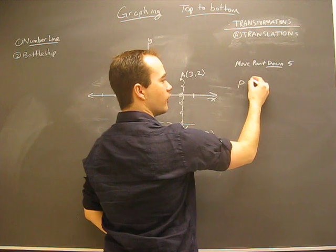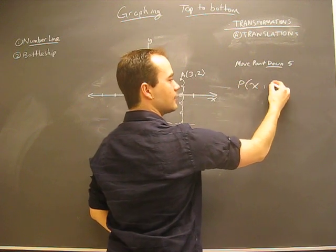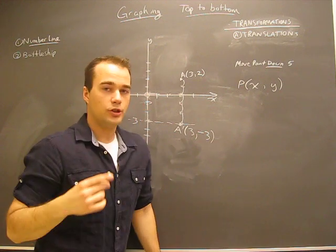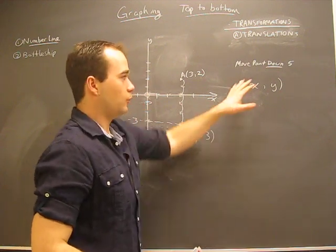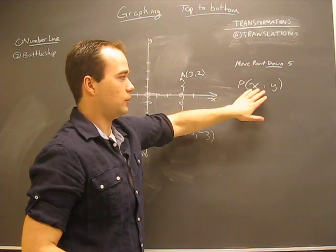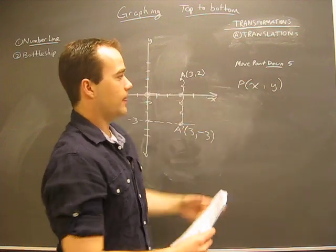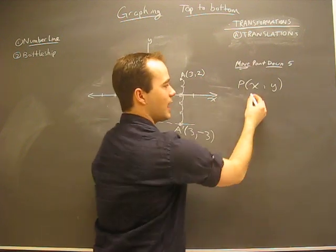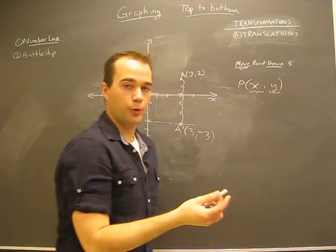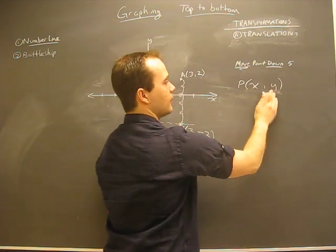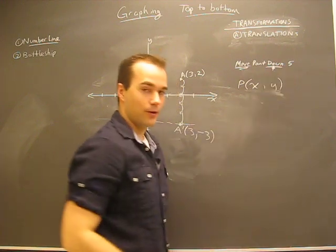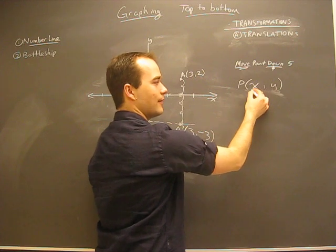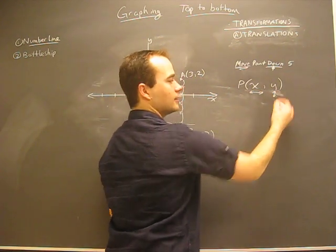We know that for any point P we're dealing with x and y, we know that already. However, we should be able to get used to understanding when we're being asked what we can do to this. Here's the instructions. It says move something. So we're going to have to show a change to one or both of those things. Well, it says move it down. So if we're going to move something down, we're not dealing with x because x deals with left and right. We're dealing with y.